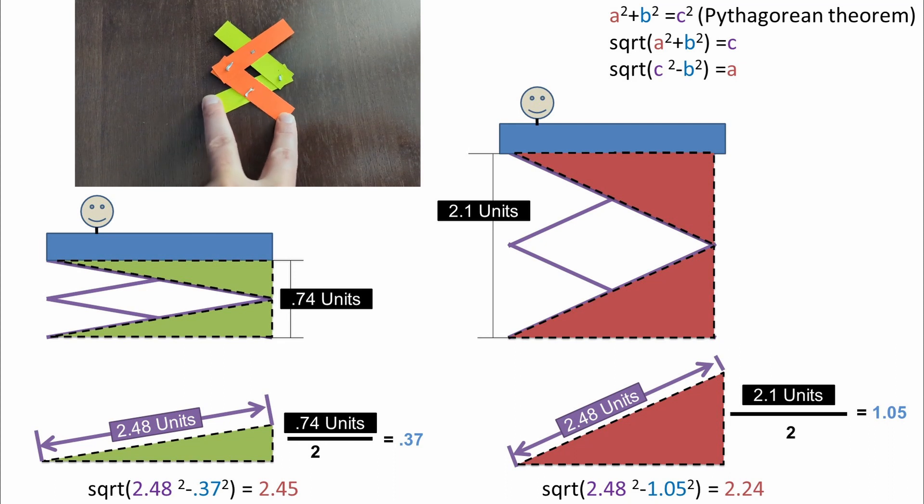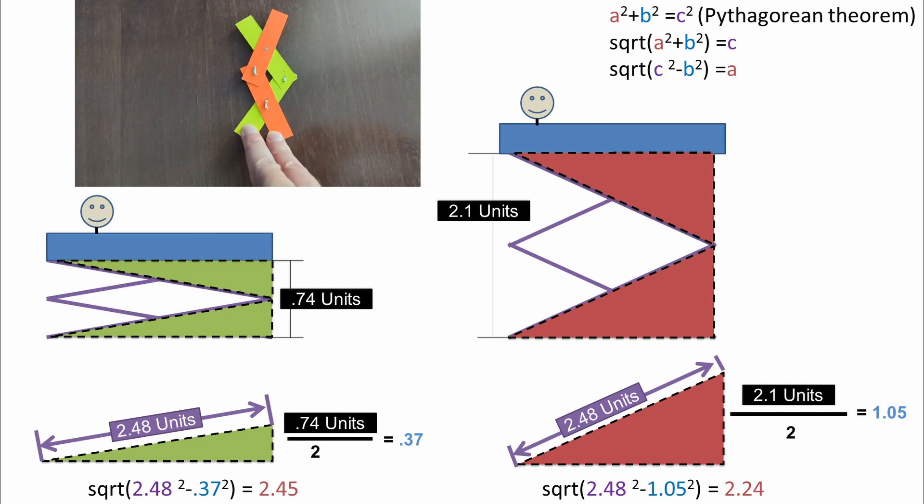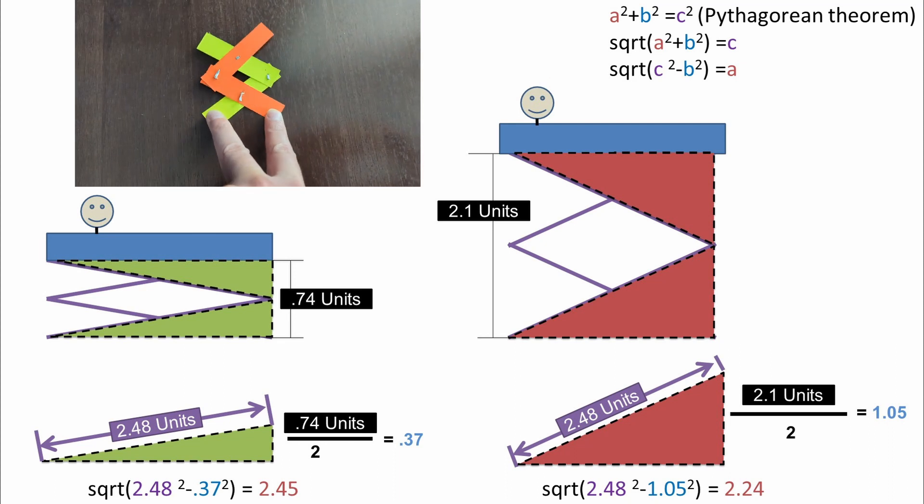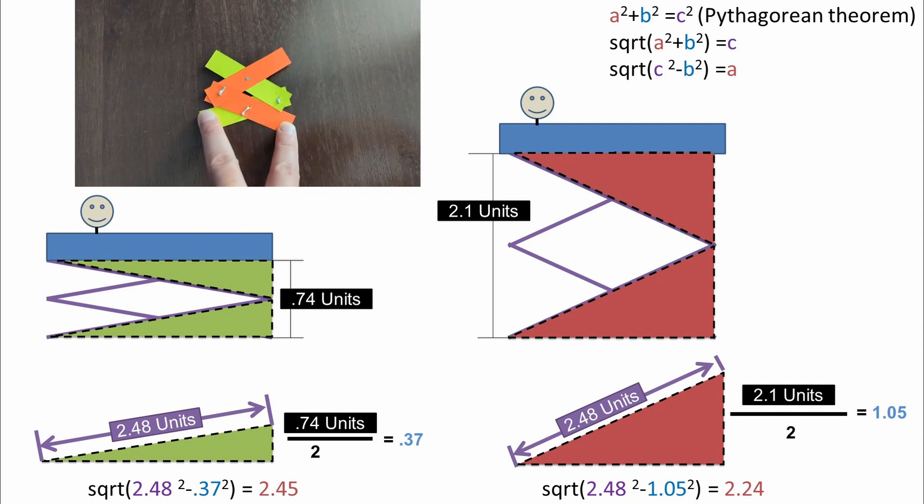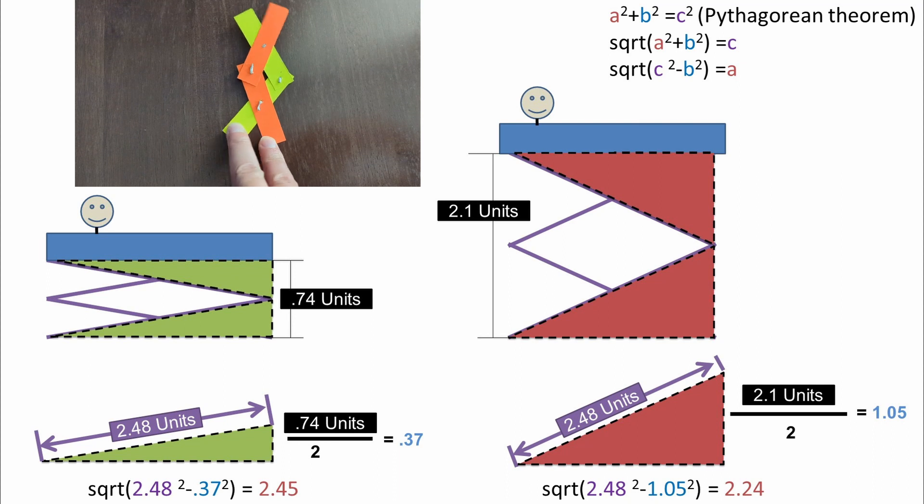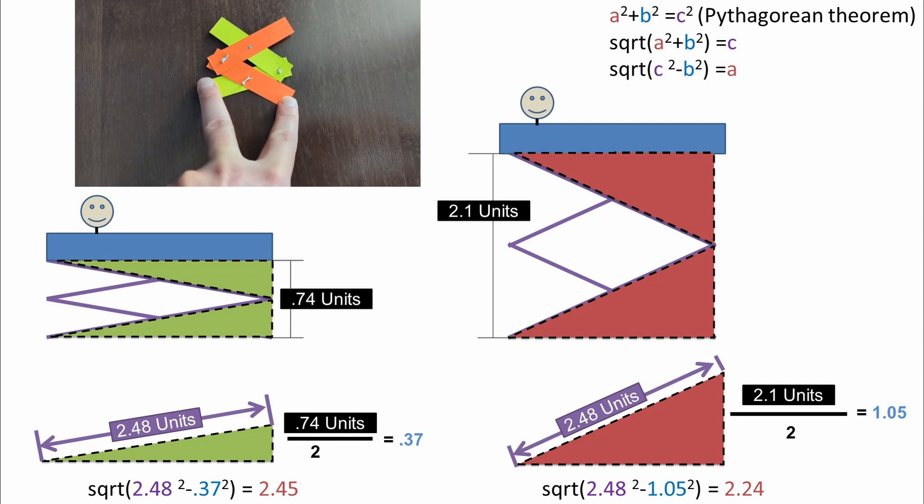We can then use another variant of the Pythagorean theorem, which is just rearranged to be the square root of c squared minus b squared equals the a side length or the span distance at the base.